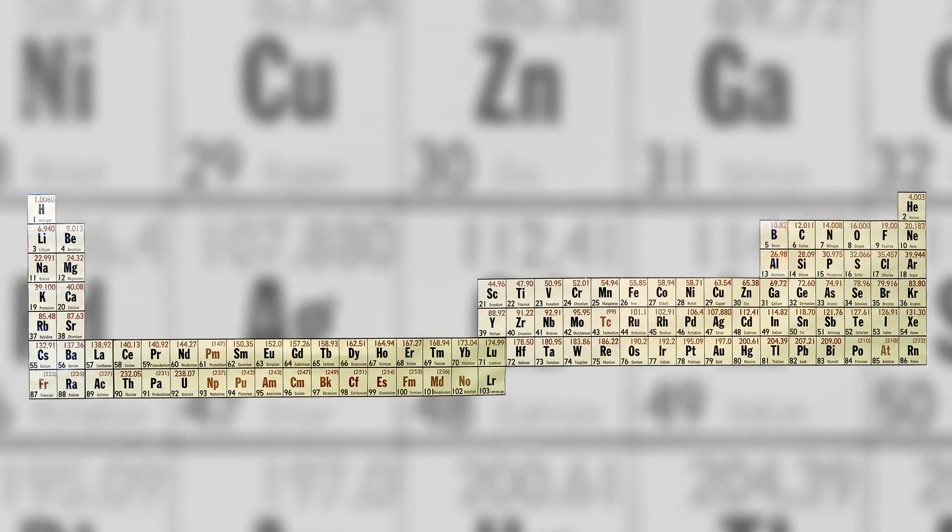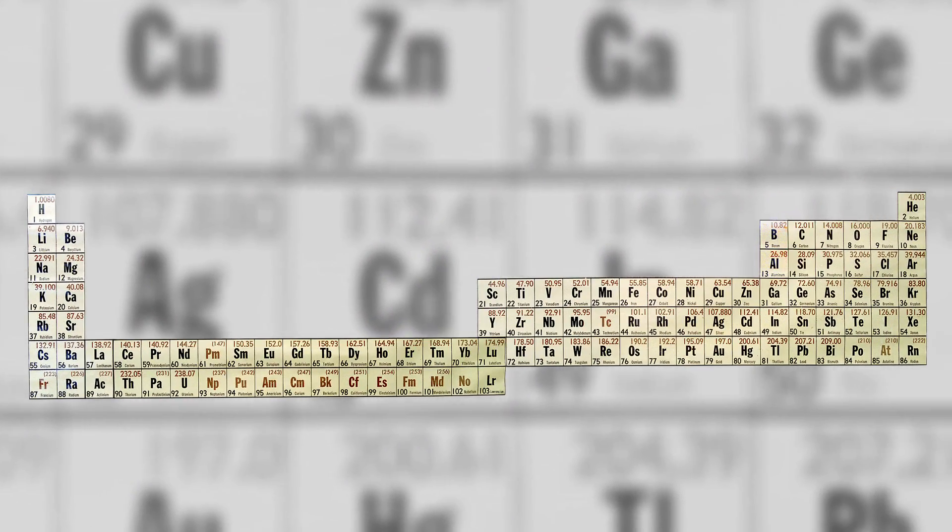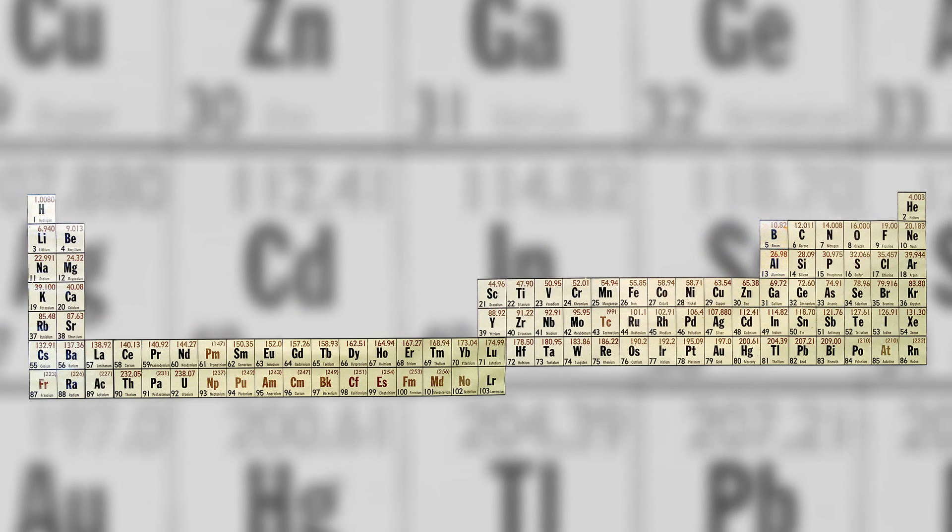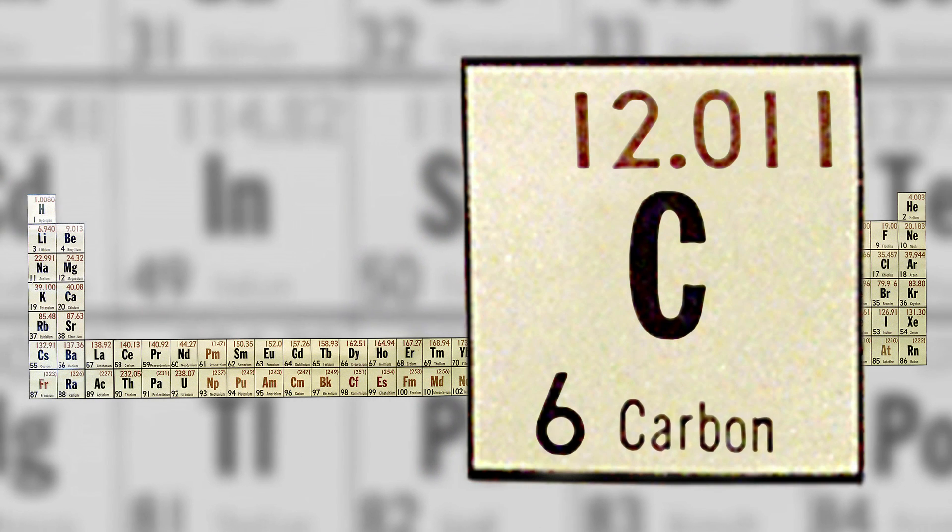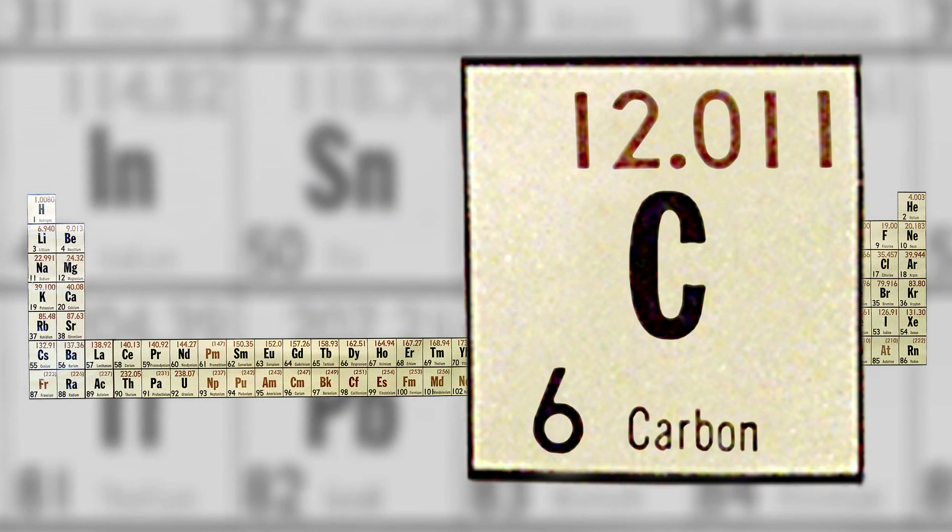The periodic table is a visual organization of elements, the basic forms of matter, by their atomic number. When you look at an element on the modern periodic table, you'll see the symbol of an element, its name, atomic mass, and its atomic number.